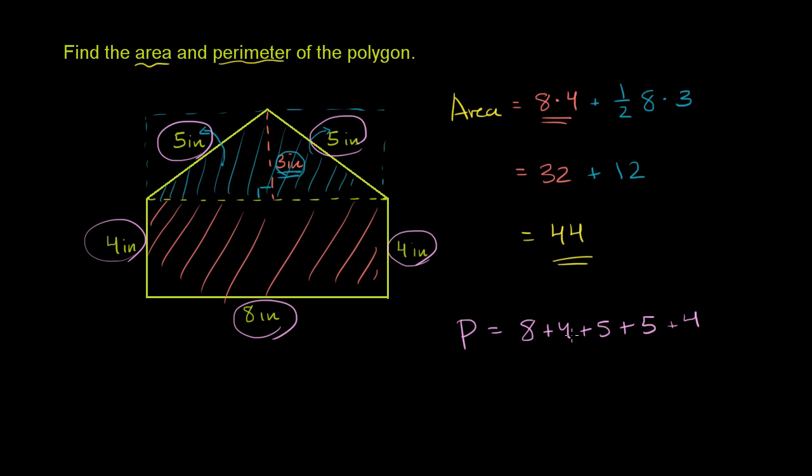So you have 8 plus 4 is 12. 12 plus 5 is 17. 17 plus 5 is 22. 22 plus 4 is 26. So the perimeter is 26 inches.